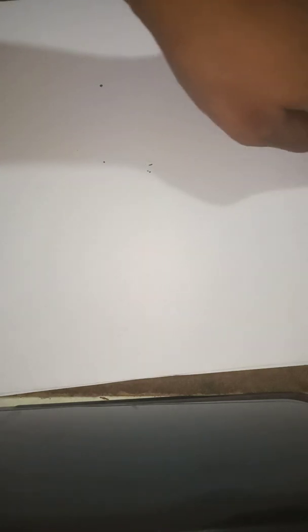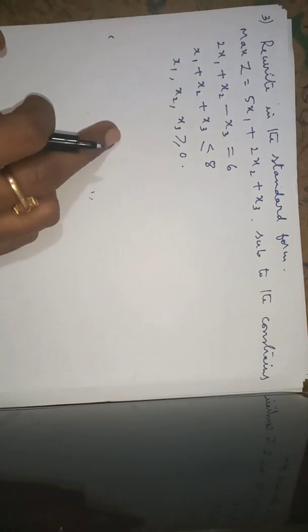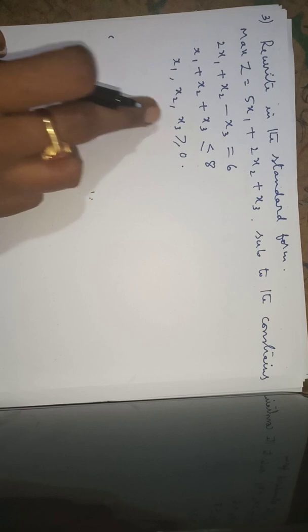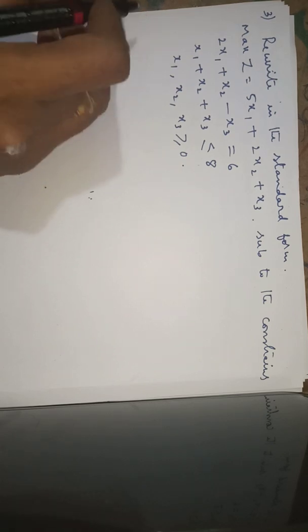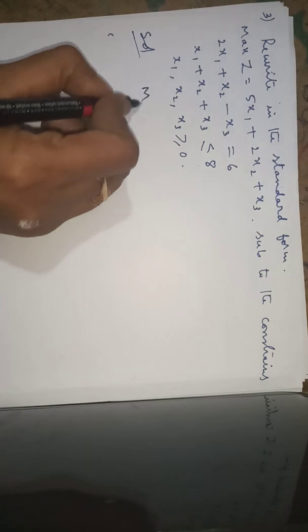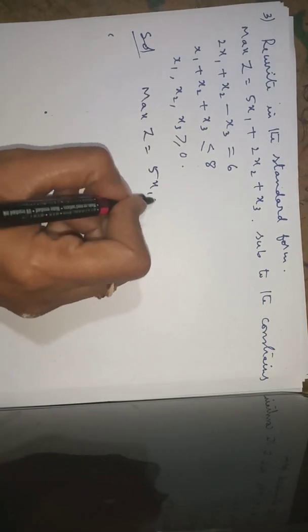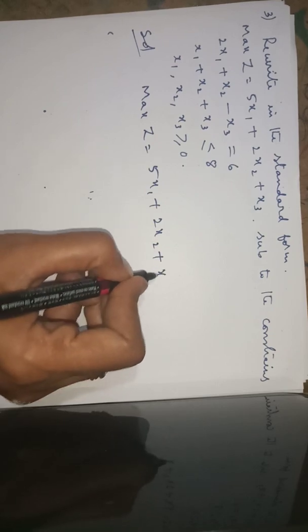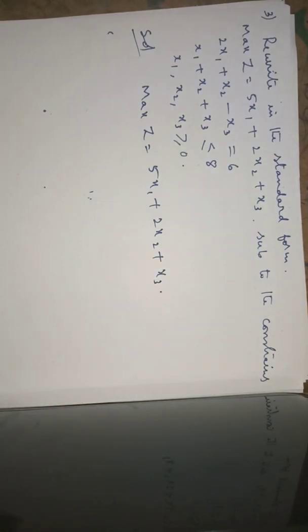Now we will do the last example: rewrite the given LPP into the standard form. The objective function is max z, subject to a first constraint, a second constraint, and all decision variables x1, x2, x3 greater than or equal to 0. The objective function is already maximization type, so we write it as it is: max z equals 5x1 plus 2x2 plus x3.